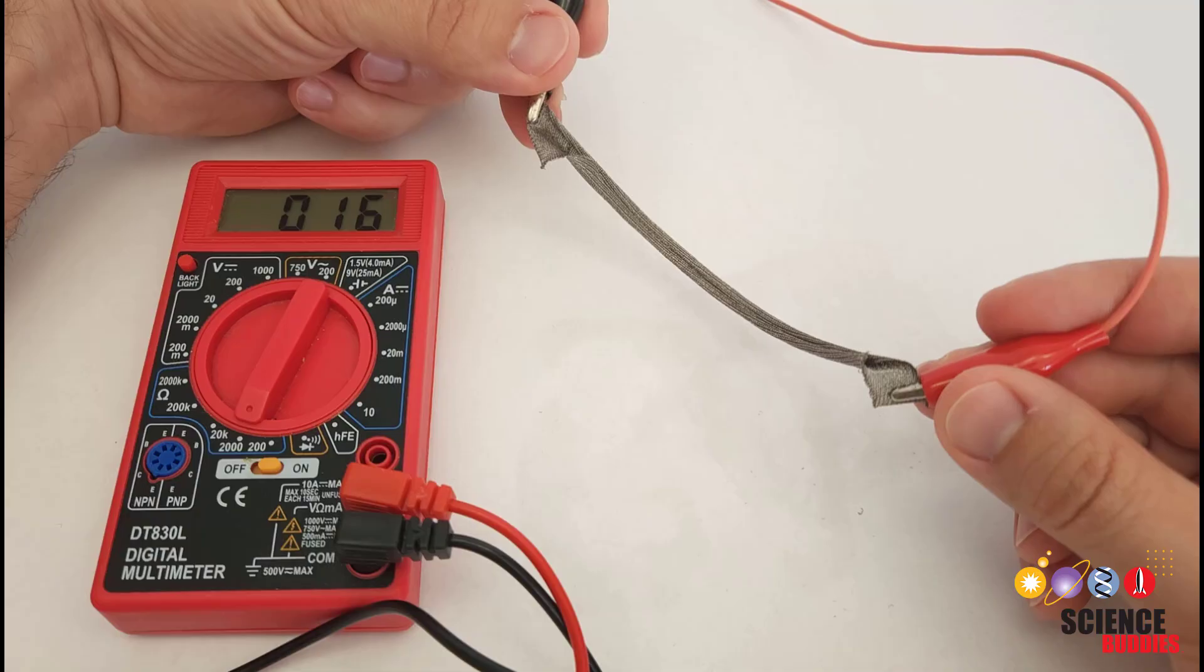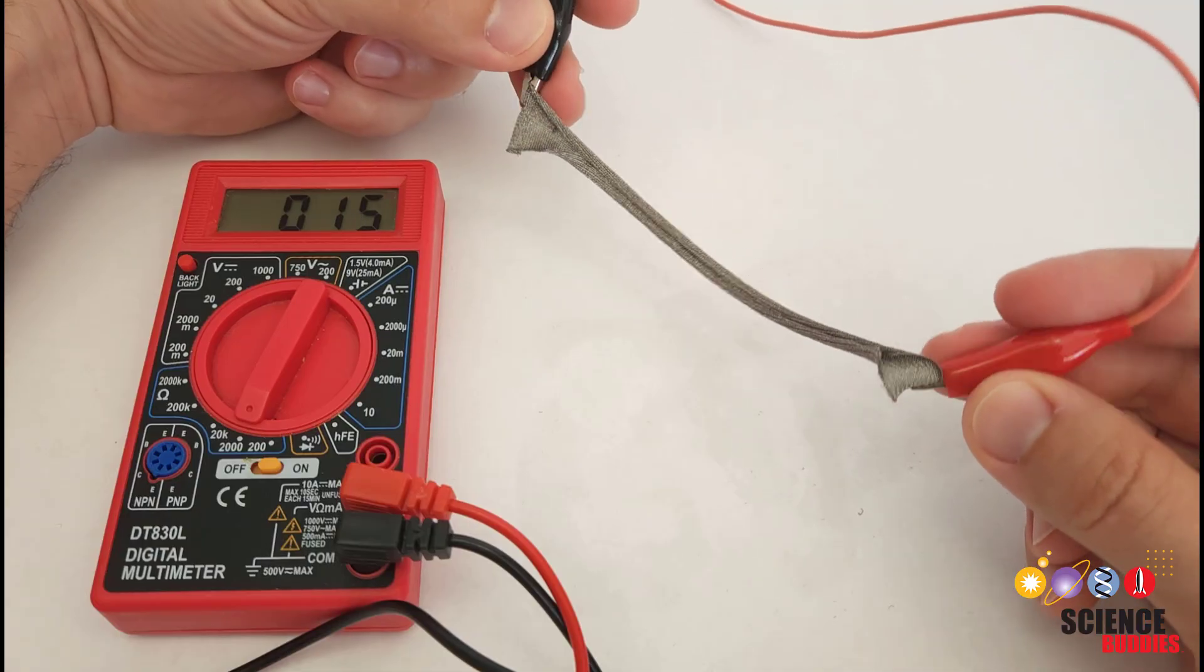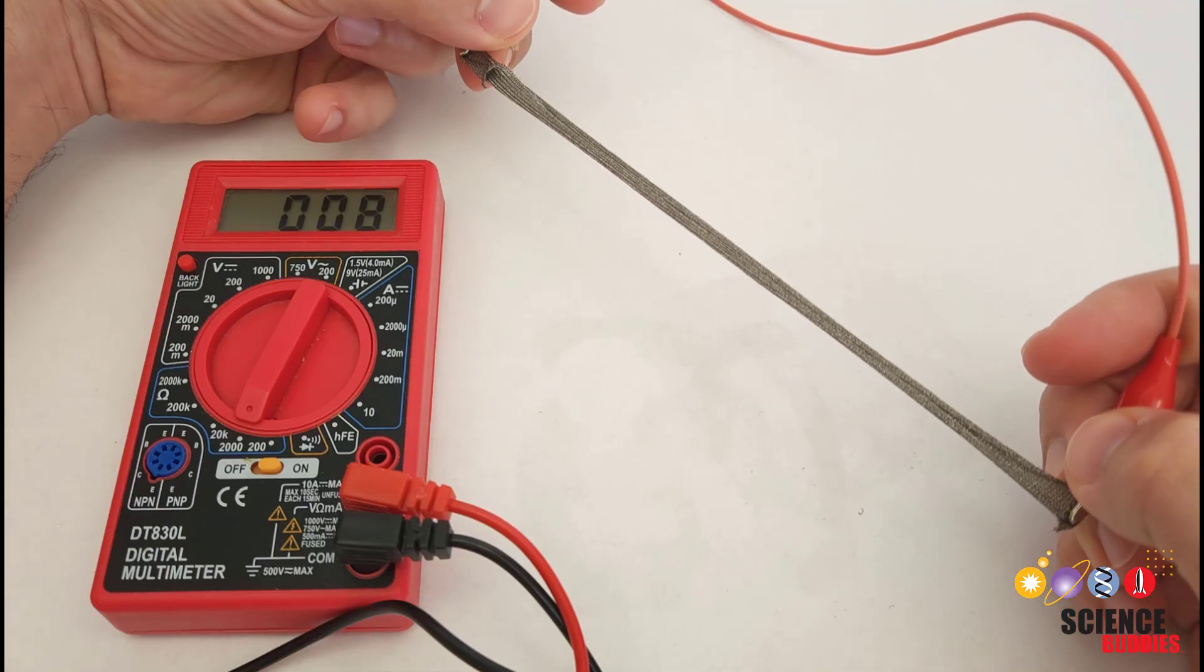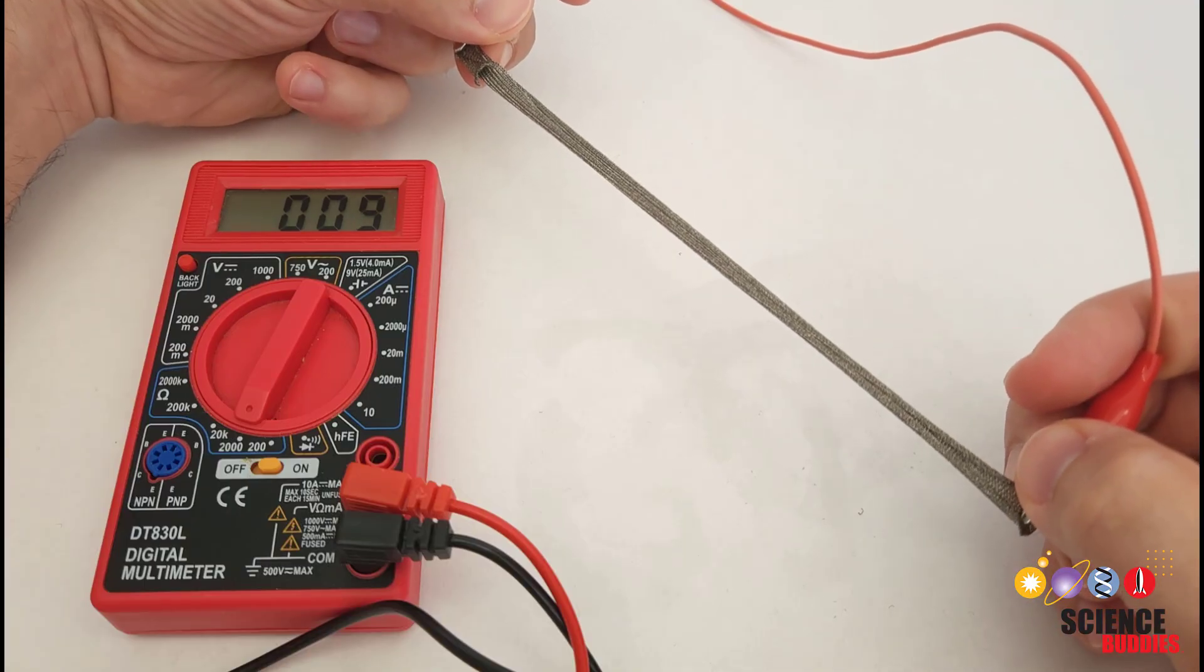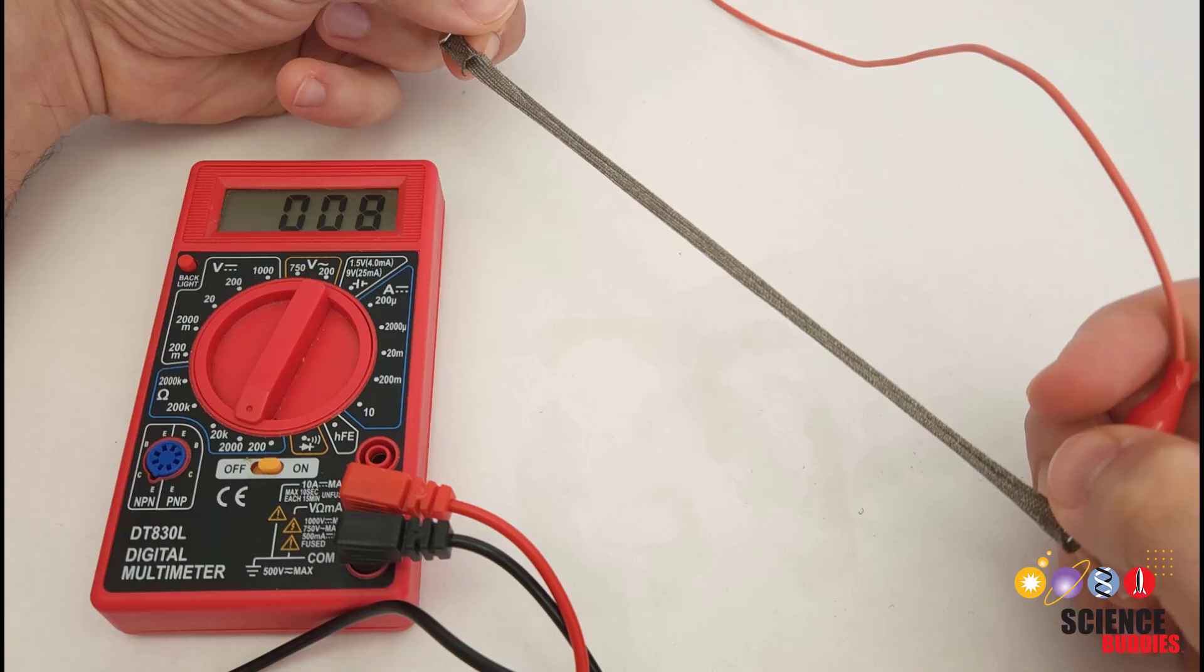However, that's for a solid chunk of material. The fabric isn't solid, it's made from many little fibers woven together. When I pull it tightly, these fibers press together more tightly, decreasing the overall resistance.